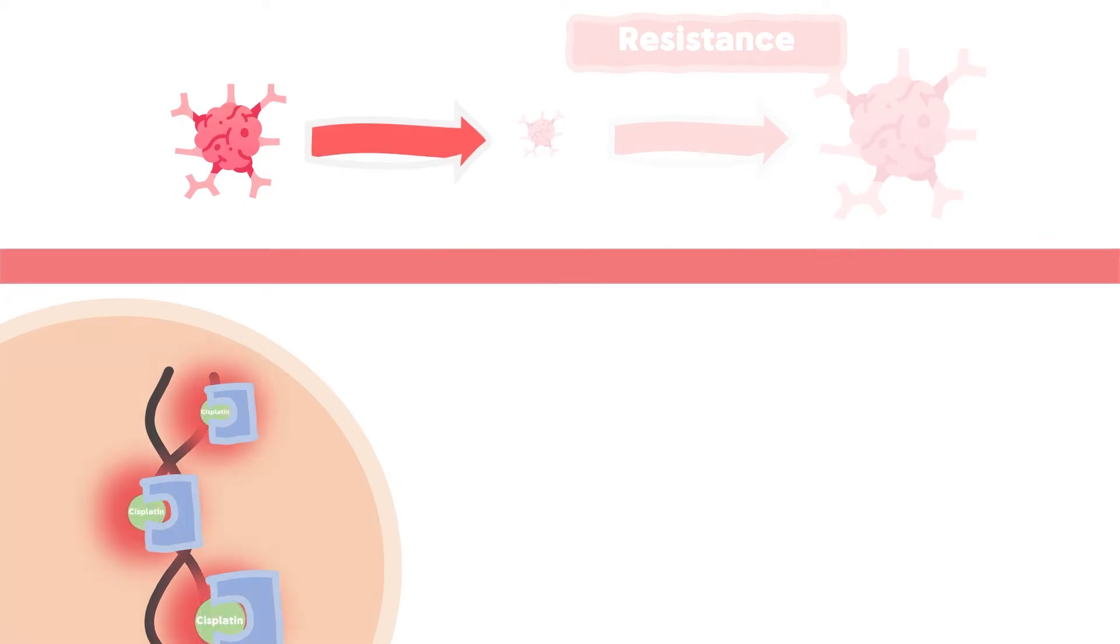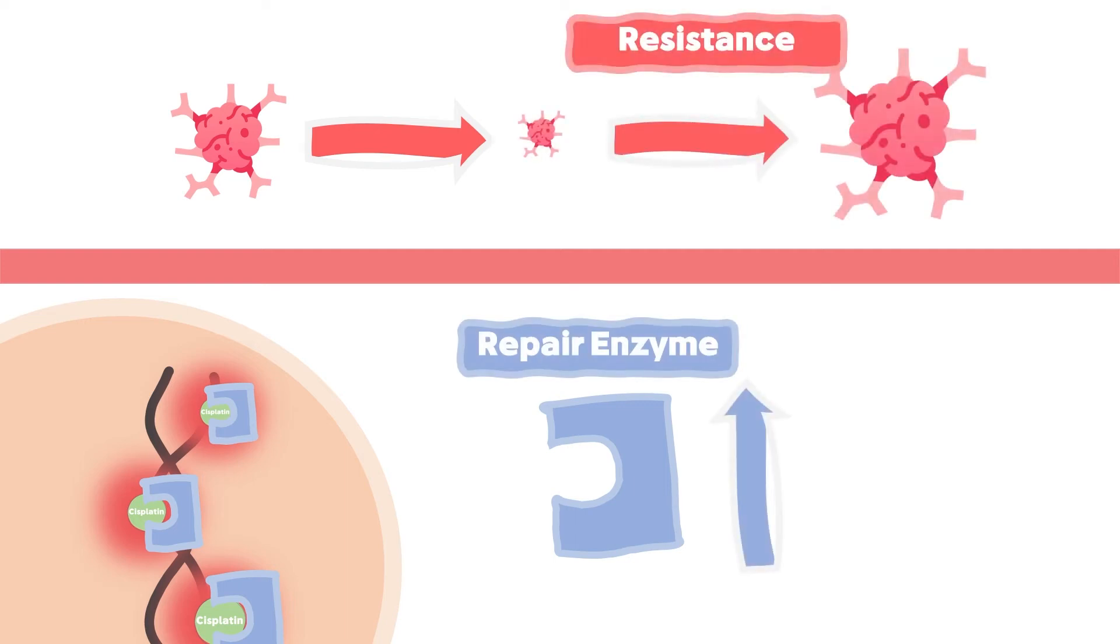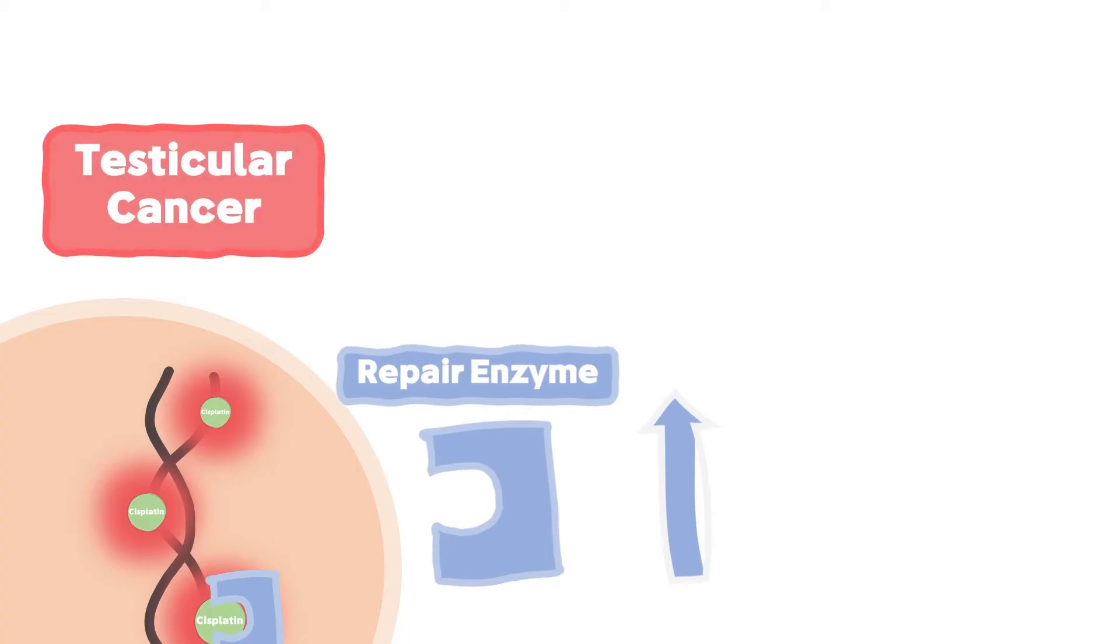These enzymes can repair the DNA and fix the damage caused by cisplatin. For the same reason, cisplatin is highly effective with testicular cancers, because testicular cancers have less repair enzymes than the rest of the body.